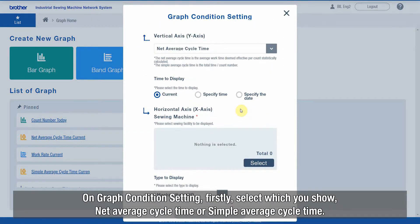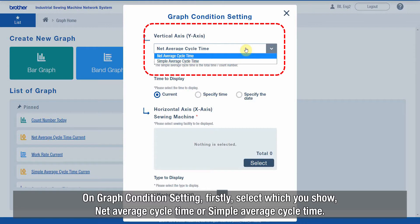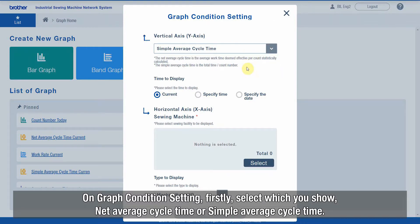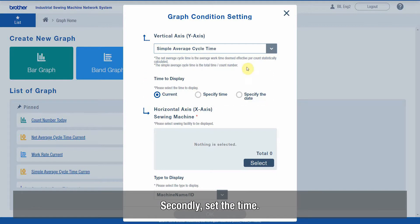On Graph condition setting, firstly, select which you show, Net Average Cycle Time or Simple Average Cycle Time. Secondly, set the time.